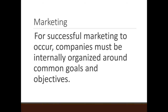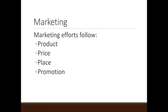For successful marketing to occur, companies must be internally organized around common goals and objectives. Everyone needs to know which way the boat is supposed to be going, rowing in the same direction, understanding what you're trying to market. Here at Texas Tech Athletics, we operate almost like an electronic media organization because we have a lot of the same goals — dual products and all these things. Right now we're focused on one thing: 32,000 season tickets in football. That's our common goal. Everything we do — does it help us move the needle on 32,000 season tickets?